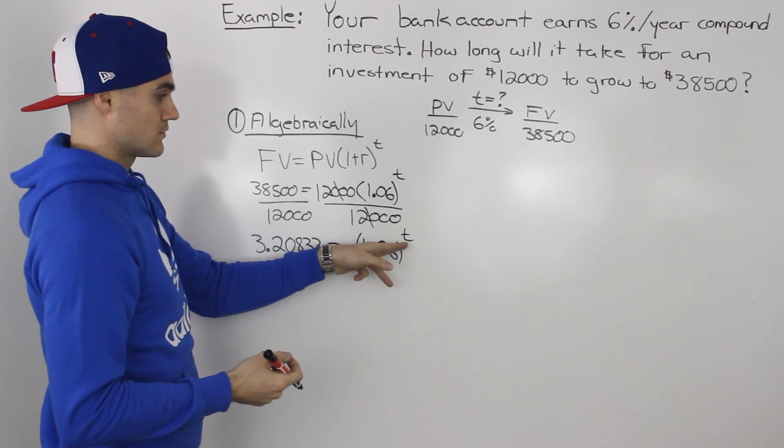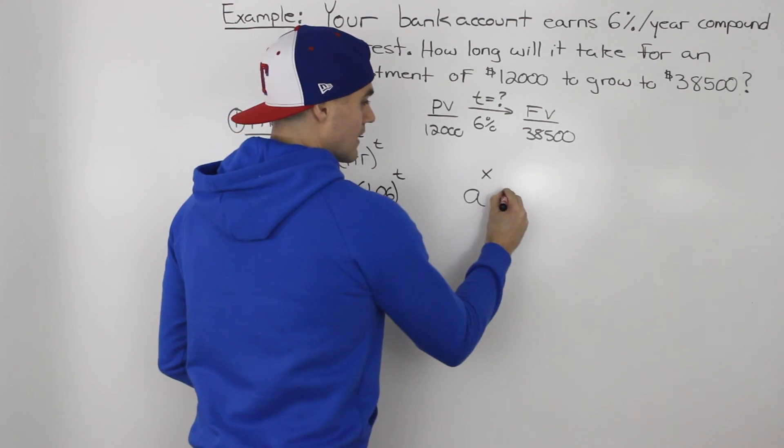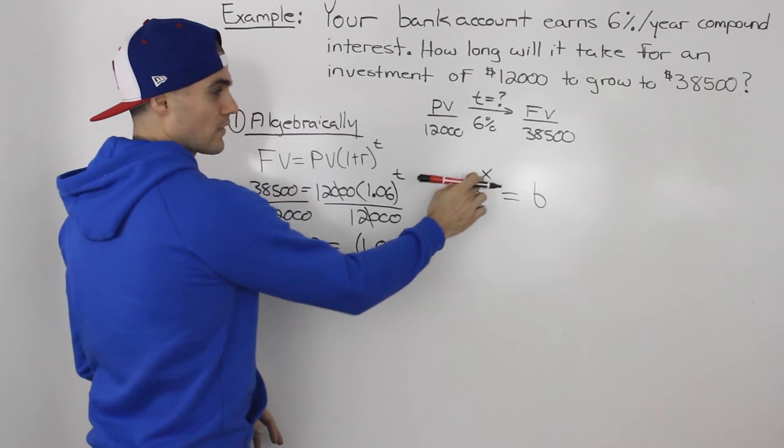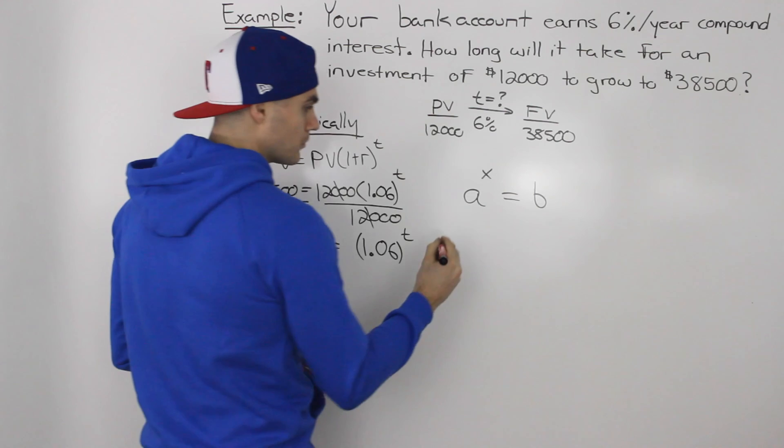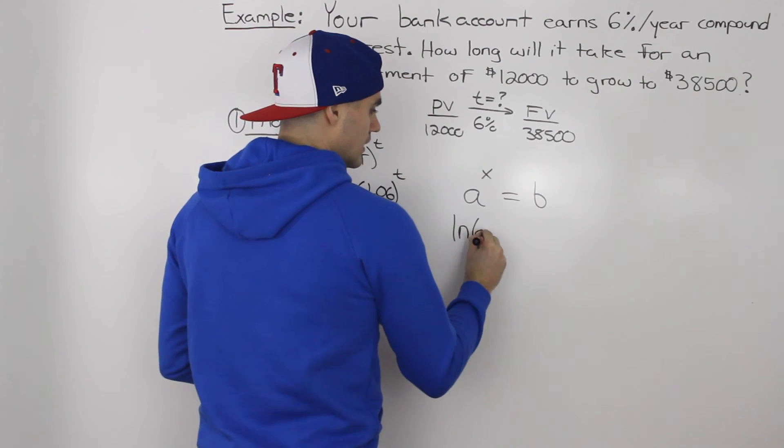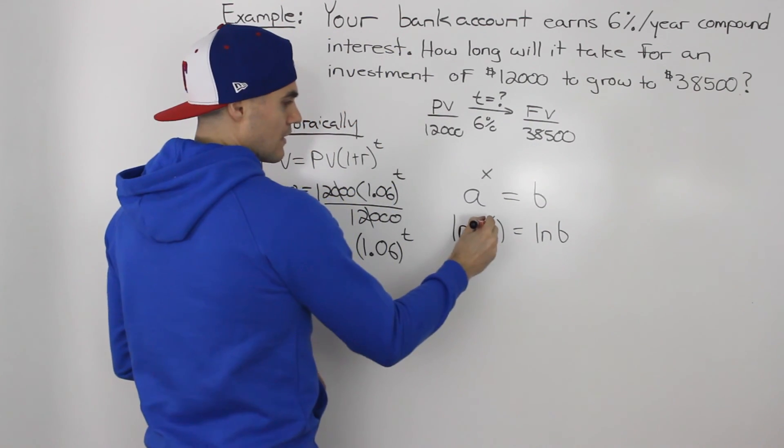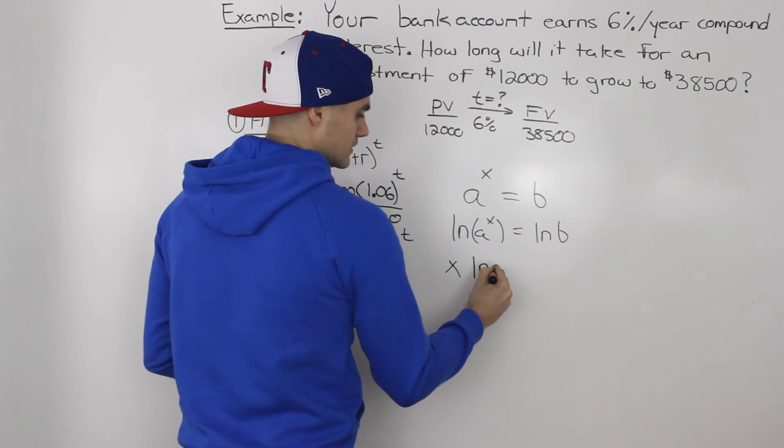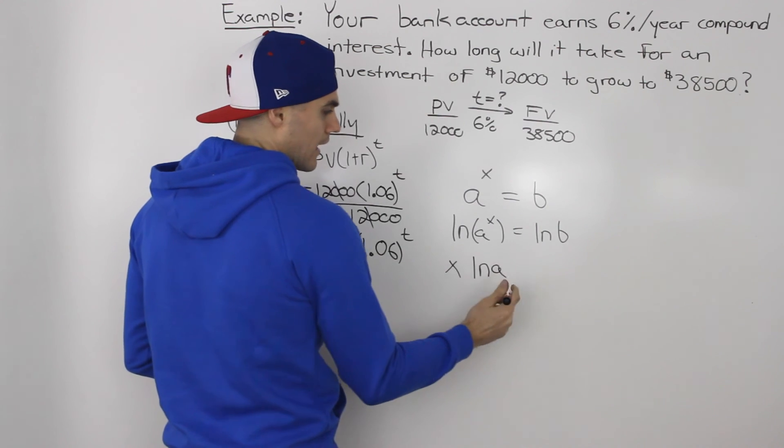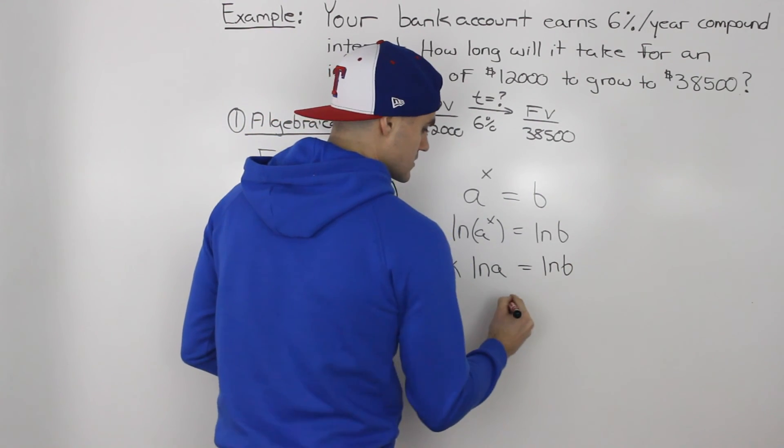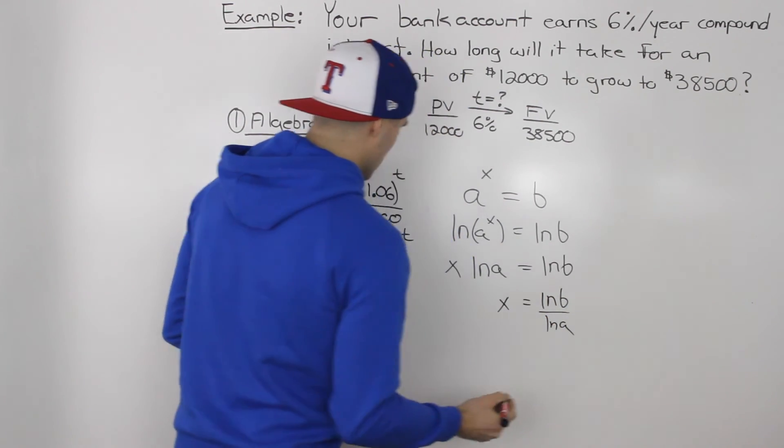Now, to solve for that variable t, let's do a little review. So let's say we got a to the x equals b, and we have to solve for that variable x. What we have to do is take the logarithm of both sides, or we could ln both sides. So if we ln a to the x, and we ln this b, then the x can come down. That's basically a rule. ln of a to the x is equal to x ln a. And then that's just ln b. So x would equal ln b over ln a. So same thing here.